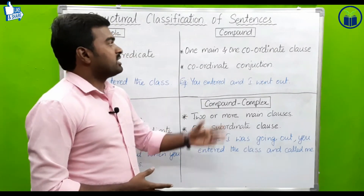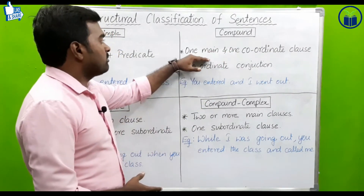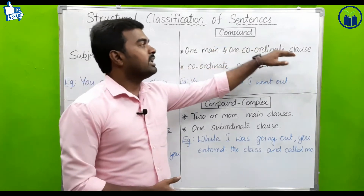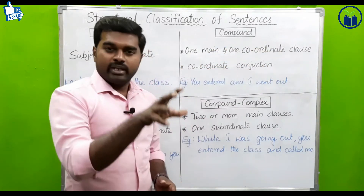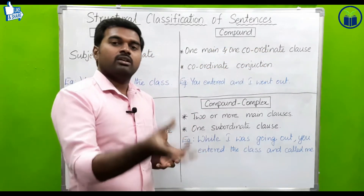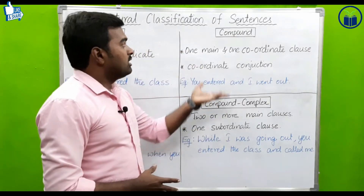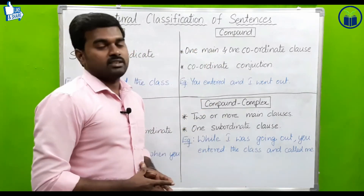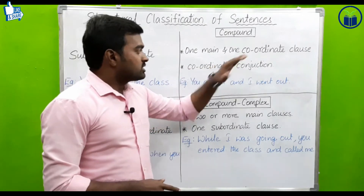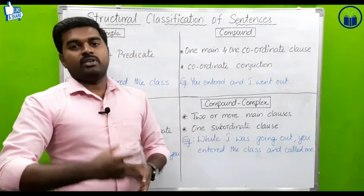Let us come to compound sentence. A compound sentence consists of one main clause and one coordinate clause. So there is one main clause, and then there is one coordinate clause. The coordinate conjunctions used in compound sentences include words like 'and' and 'but'.